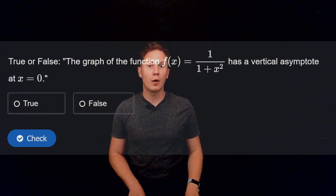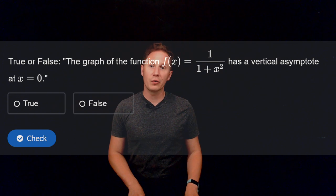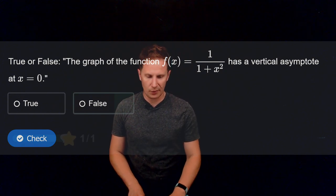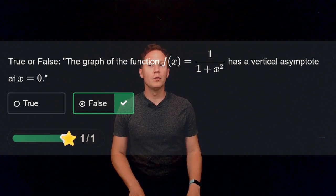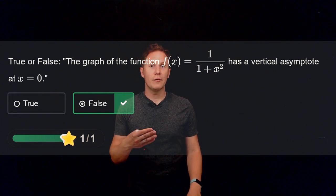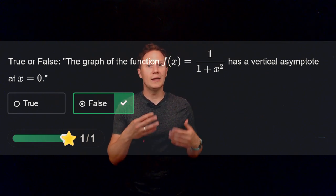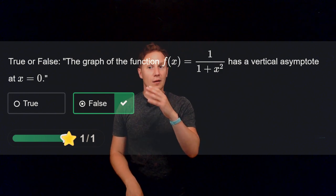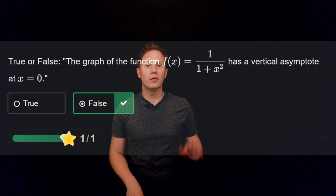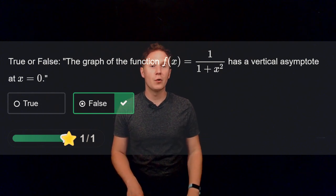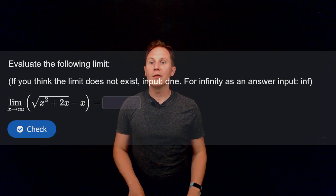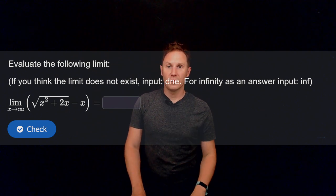Is it true or false that the graph of f(x) = 1/(1 + x²) has a vertical asymptote at x = 0? This is false. Having a vertical asymptote would mean that as x approaches 0, the left-hand or right-hand limit should be infinite. But in this case, the limit as x approaches 0 of this function is simply the finite number 1. Hence there is no vertical asymptote at x = 0.